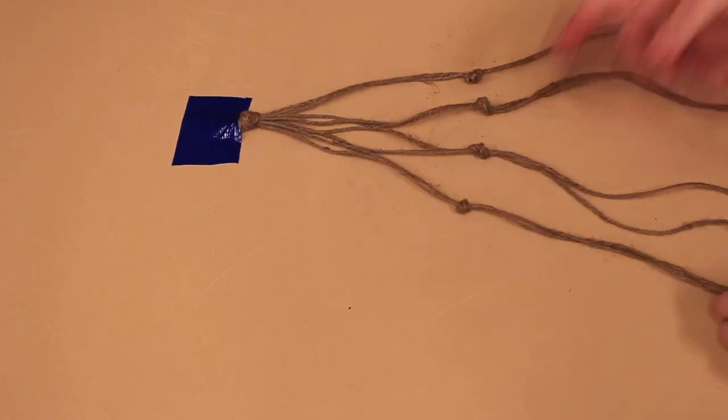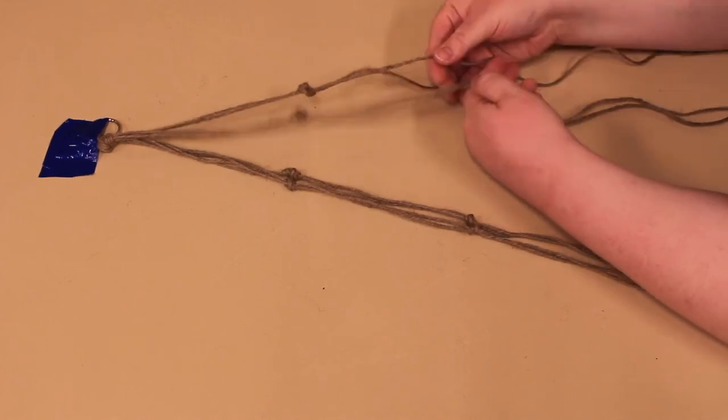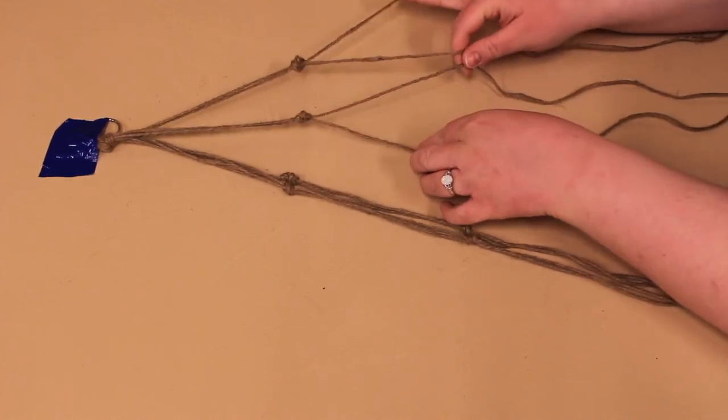Move down another six to eight inches and take two strands, one from each group, and tie knots in the new pairs.